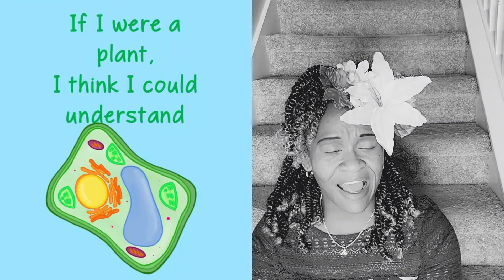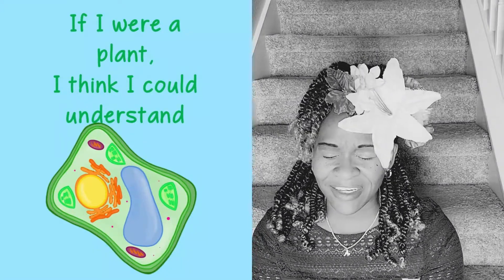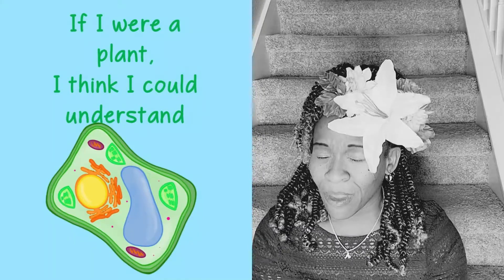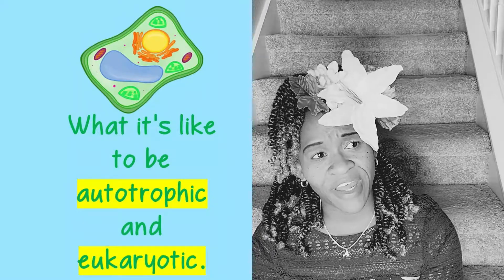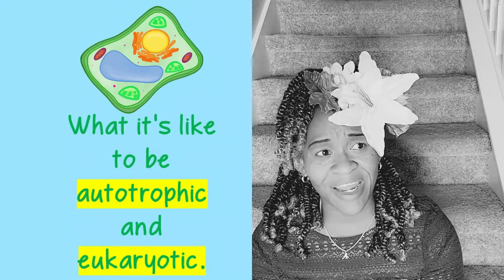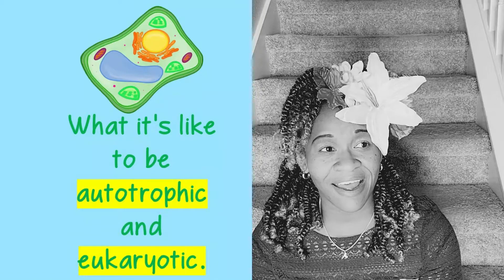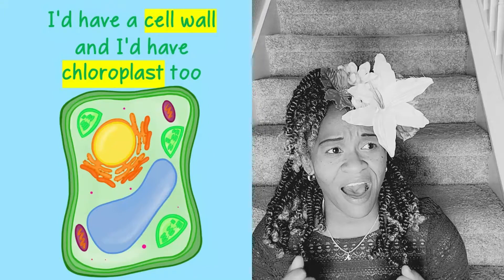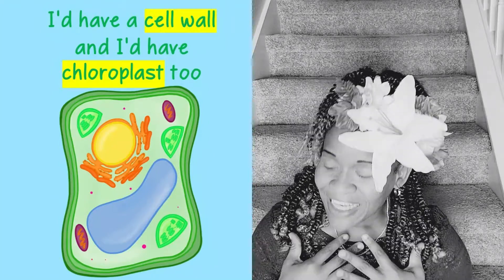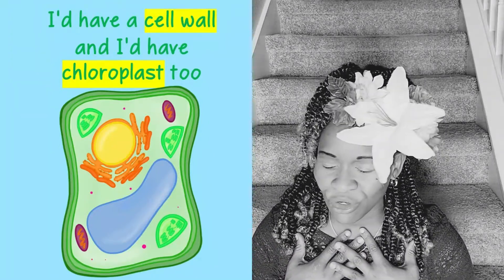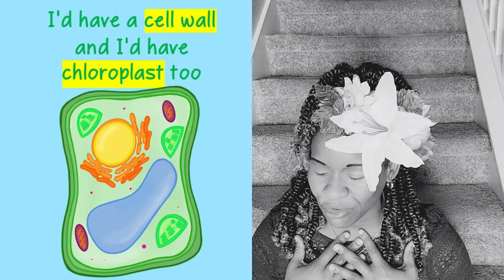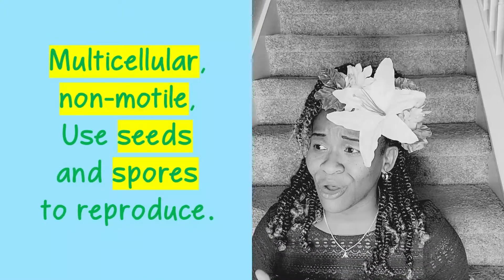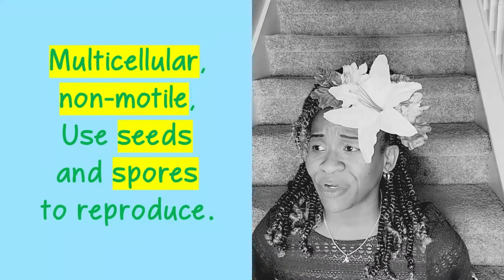I think I could understand what it's like to be autotrophic and eukaryotic. I'd have a cell wall and I'd have chloroplasts too — multicellular, non-motile, using seeds or spores to reproduce.